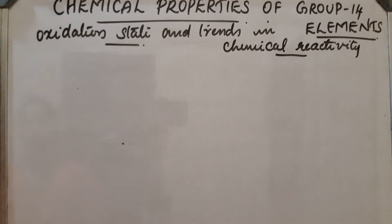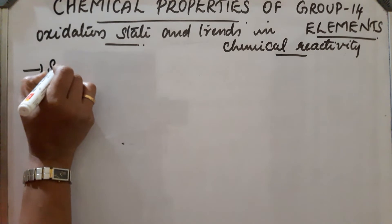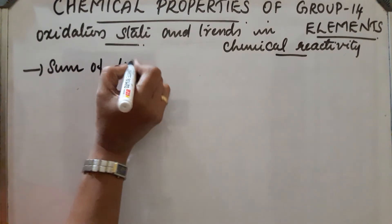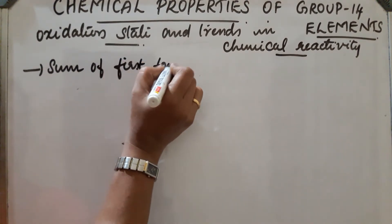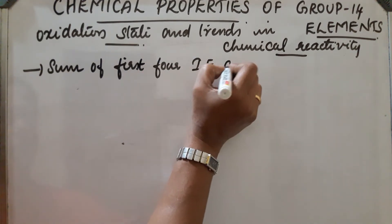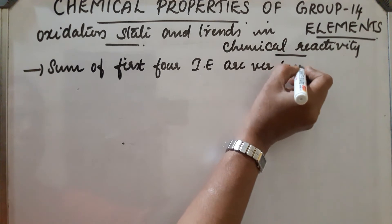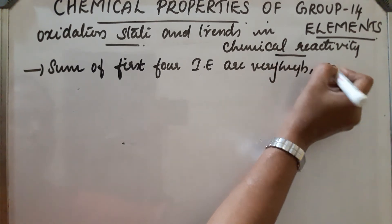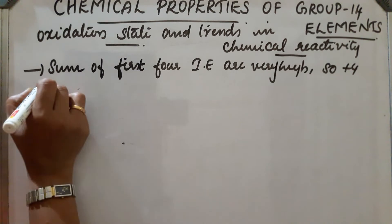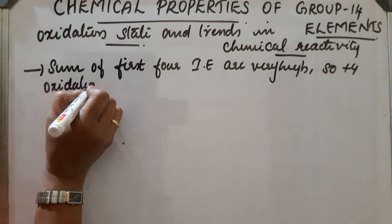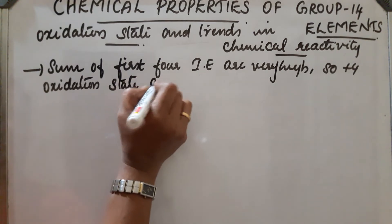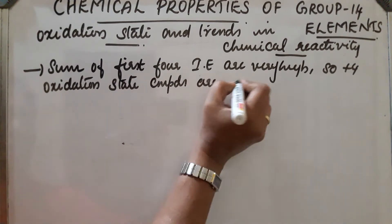The sum of the first four ionization energies of Group 14 elements are very high. Therefore, the plus 4 oxidation state compounds form covalent compounds — that is, these compounds are covalent in nature.